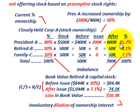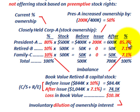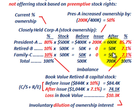That brought president A up to 85.7% ownership. Retired stockholder B and family member C had their percentage knocked down — $50,000 each over the total capital outstanding of $700,000 brings them down to 7.1% each. So we have an imbalance. President A increased his share from 80% up to 85.7%, and since no additional interest was issued to stockholders B and C, their interest in the company dropped from 10% down to 7.1%. This is where the argument comes in with preemptive rights.